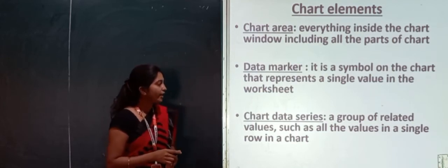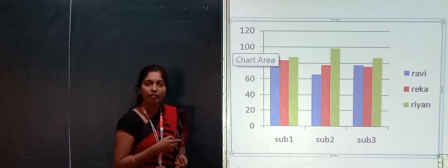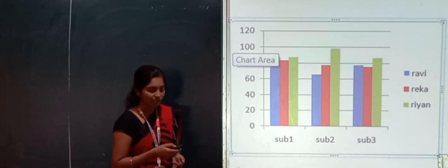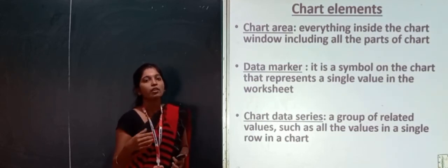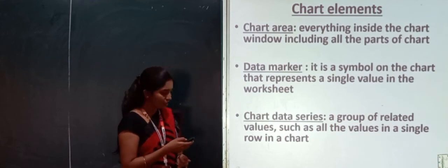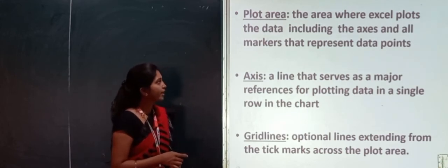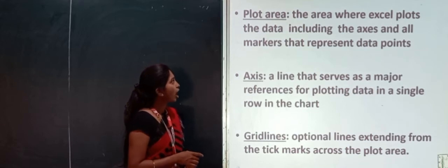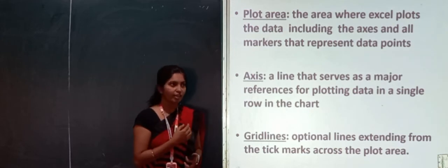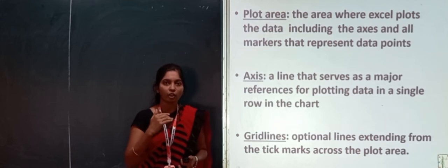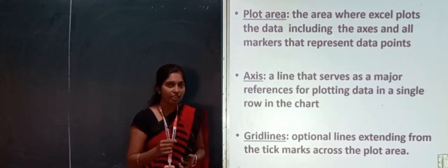Then chart data series — these are series of data represented by different colored columns in the chart. Each data plotted in the plot area is called chart data series. The plot area is the area where Excel plots the data, including the axes and all markers that represent the data points, with vertical and horizontal axes.